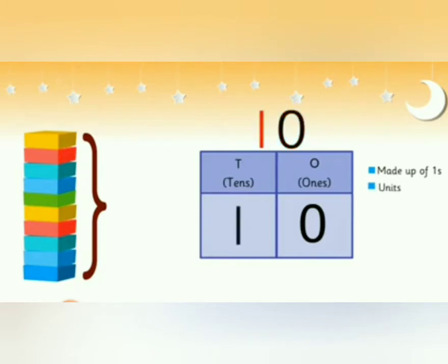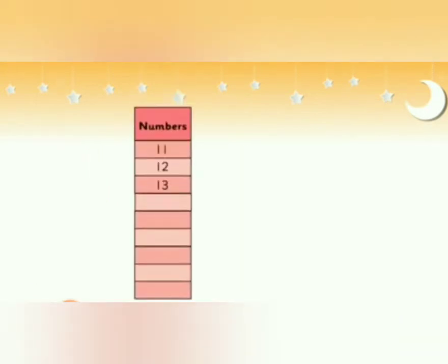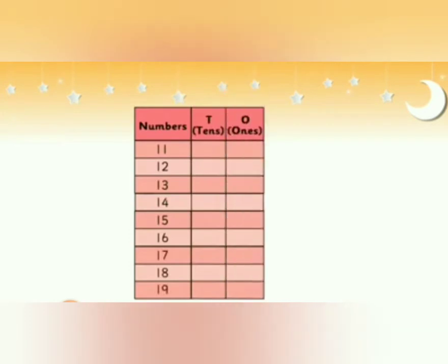Zero in ones house and one in the tens house, this is ten. Now we'll see some more examples. Zero is also called ones, is also called units. Now we'll see examples. We'll see numbers from eleven to nineteen, how it is placed.